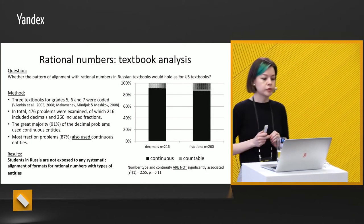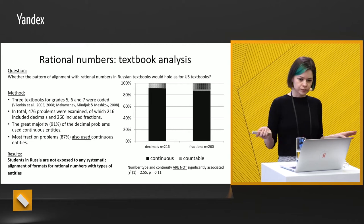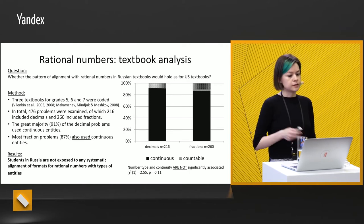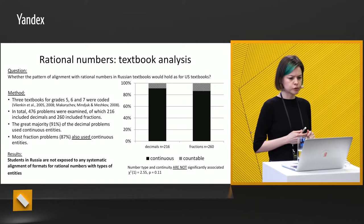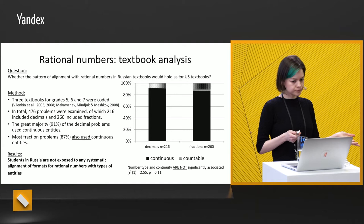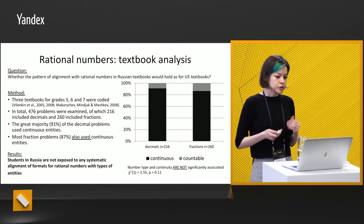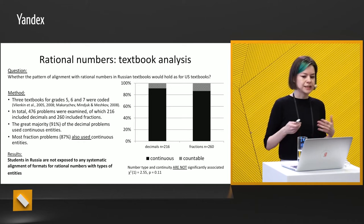Next, we go to semantic alignment with rational numbers. First, we again did textbook analysis — the procedure was the same. We took three textbooks for another grade, which are also very popular. We classified word problems as those including decimals or fractions, and then classified objects as continuous or discrete entities. Very interestingly, most problems we found in our textbooks included continuous entities — salaries, water, fields, and so on.